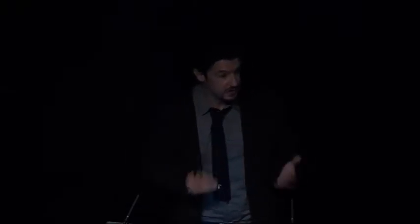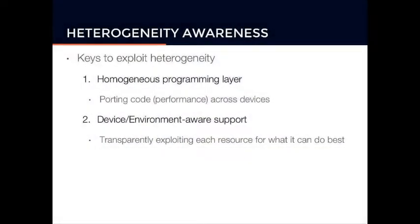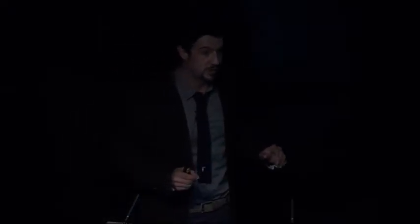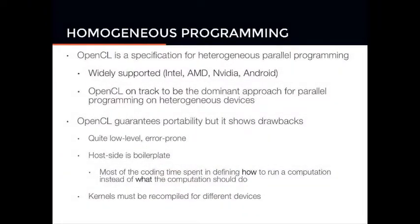What's needed is a simple, high-level, homogeneous way to code across different devices, and smart runtime support to get the most out of each device for each computation. The key to exploiting heterogeneity is a homogeneous programming layer—able to port code and performances across all devices—while underneath, a support layer that knows the differences between devices to exploit each one in each particular case.